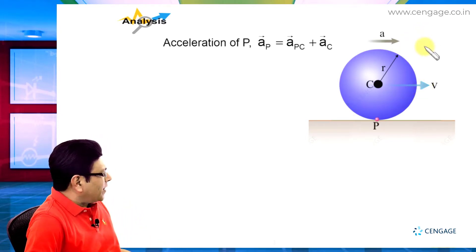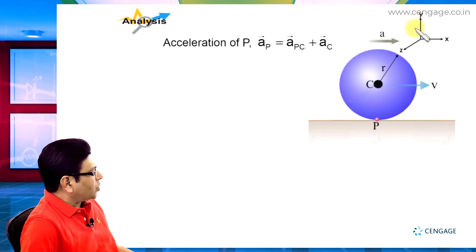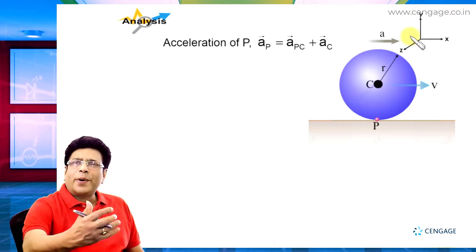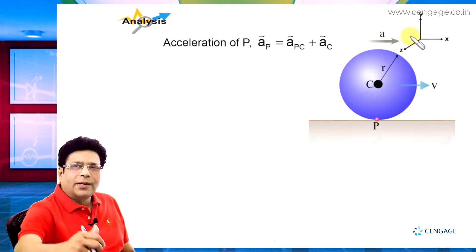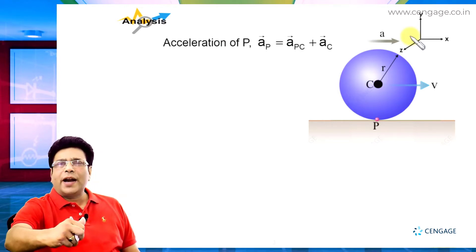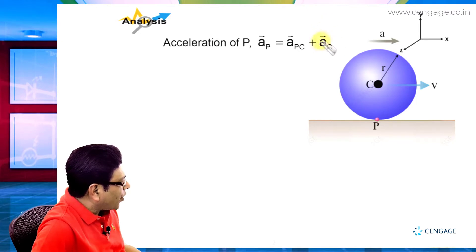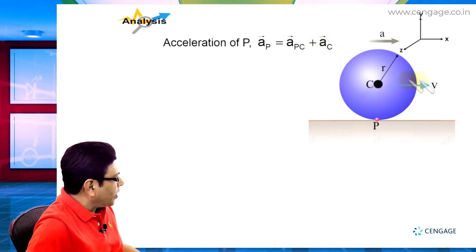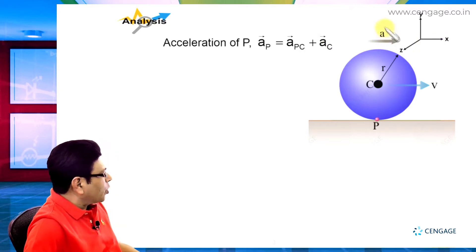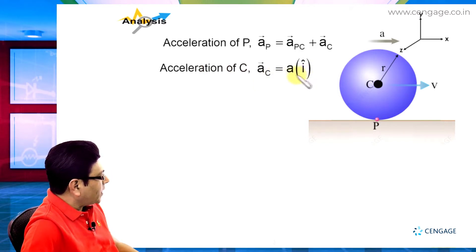Let us assign our directions. Rightward direction is positive x, upward direction is positive y, and the direction perpendicular to the screen and toward you is the positive z direction. So we can write the acceleration of point C, that is the centre of the disk, as AC equal to A i-cap, since A is in the direction of positive x.